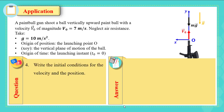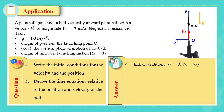Question 4: write the initial conditions for velocity and position. r vector at t=0 equals the zero vector, because the ball started from the origin. v₀ vector equals v₀ĵ, since it is launched with initial velocity vertically upward. Question 5: derive the time equations for the position and velocity of the ball using the antiderivative table.